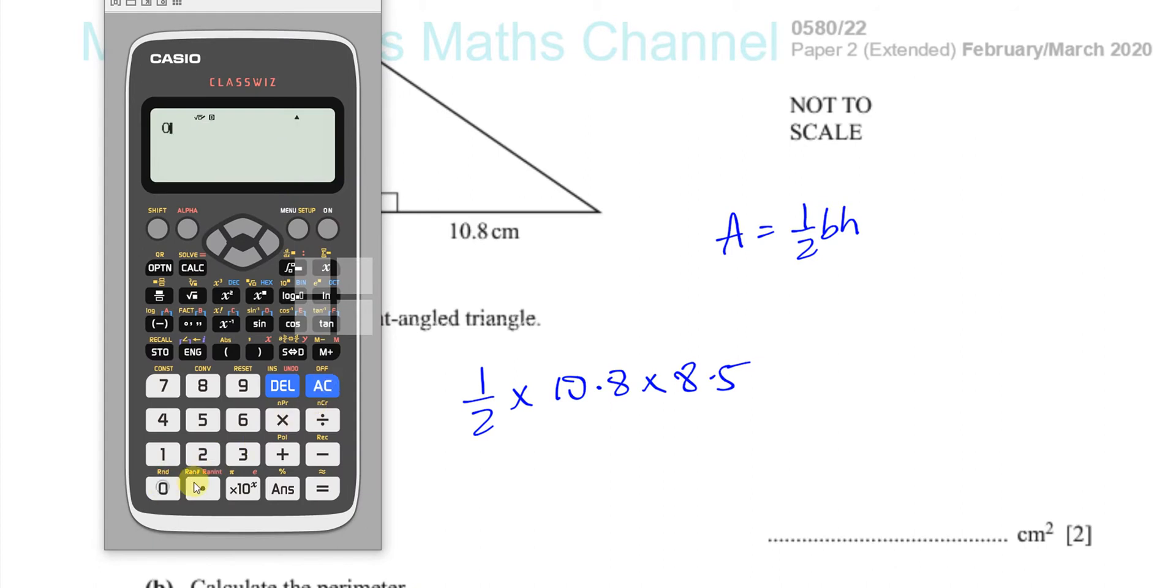So we're going to take a half, which is 0.5 multiplied by 10.8 multiplied by 8.5. And that gives you, just to make sure we've written everything correctly in the calculator, always do that because it's very easy to press the wrong button. And you get 459 over 10, which is going to give you 45.9.